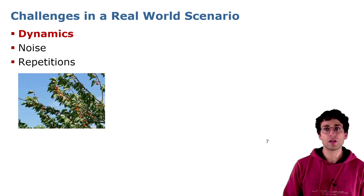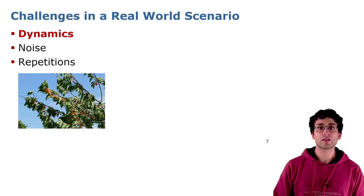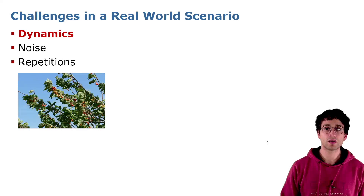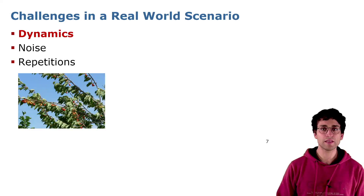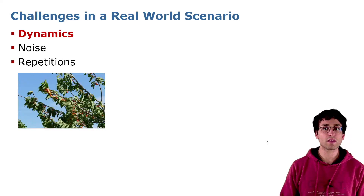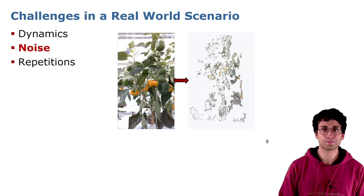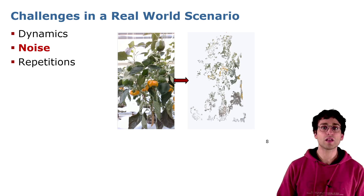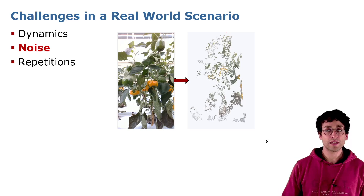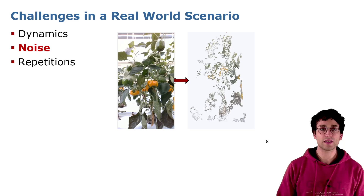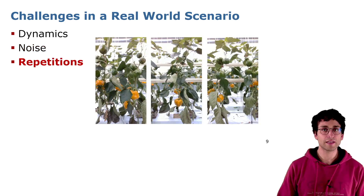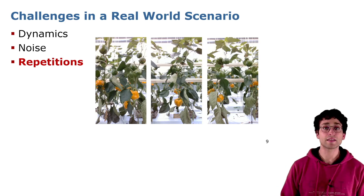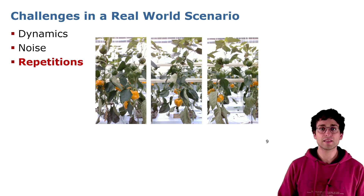When operating in agriculture we face different challenges, especially if we want to deal with real world data in a non-intrusive way. One main challenge is dynamics — plants move continuously, for example because of wind or because they change shape while growing. A second major challenge is noise. Especially when using cameras, if we translate measurements into 3D models, we have to deal with a lot of noise from the sensors themselves or from external factors like light conditions. Finally, all plants look the same — it is hard to recognize the same plant some time later in the same field, because there is no distinctive characteristic that appears immediately.